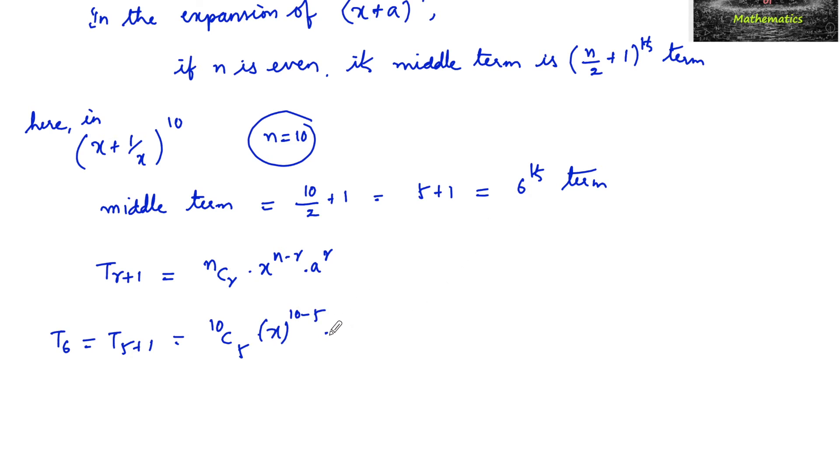And a is 1 upon x, so 1 upon x whole to the power of 5. So we can write this is 10 c 5 into x to the power of 5 into 1 upon x to the power of 5. We can cancel both and give the answer 10 c 5.